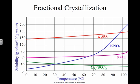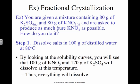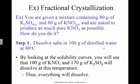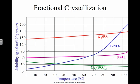Fractional crystallization has to do with this. If you're given a mixture that contains 80 grams of K2SO4 and 80 grams of potassium nitrate, and you're asked to produce as much pure KNO3 as possible, how would you go about doing it? Well, here's K2SO4, and here's KNO3. So what I would probably do is take something like 100 grams of water and raise it to 80 degrees Celsius. So 100 grams of water at 80 degrees Celsius.